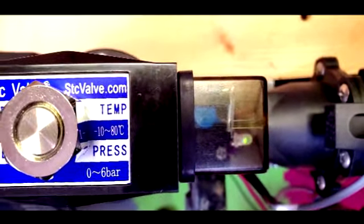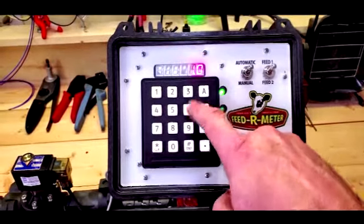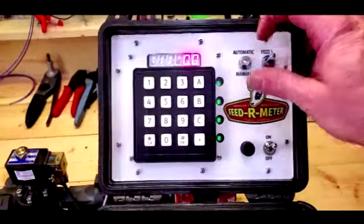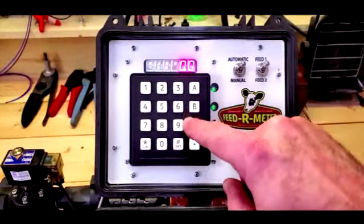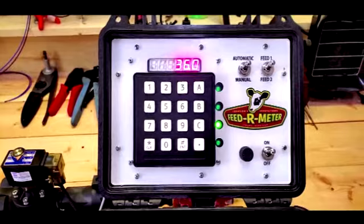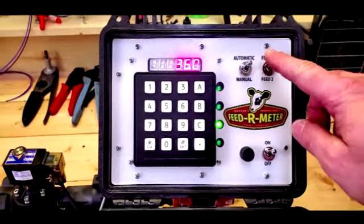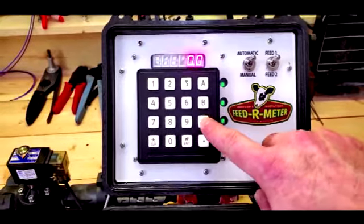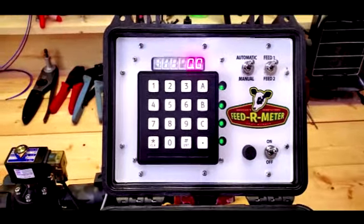This happens every time. Let's make sure that we have our feed rate set correctly on one and two, and let's make sure we're in automatic. Check to make sure your calibration is set correctly. This is calibration for quartz - anything can be calculated off of this. We are set on both sides, now ready to go feed.